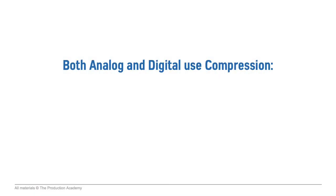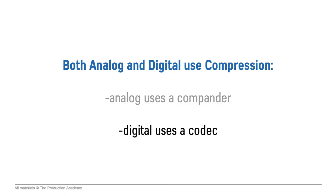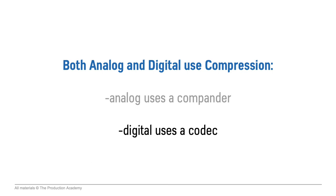Additionally, both analog and digital wireless systems use compression schemes to operate efficiently. Analog wireless systems use a compander to compress the audio signal before transmission, and digital wireless systems use a codec, similarly to how we compress audio information into an MP3.